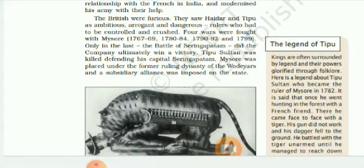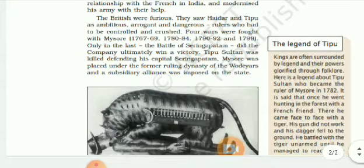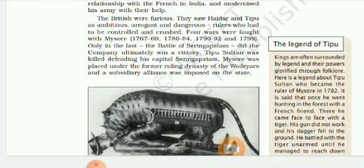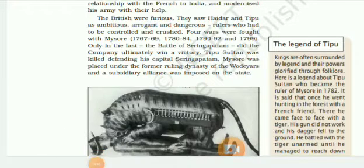Sindh and Afghanistan: The EIC wanted to annex Afghanistan; however, it could not be possible without conquering Sindh. In 1809, a treaty was signed with the Amirs of Sindh. As per this treaty, the Amirs promised not to let the French pass through their territories, and the British promised not to transport arms through Sindh. The next discussion will take place in the next video. Thank you.